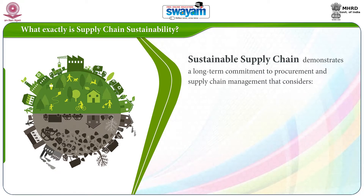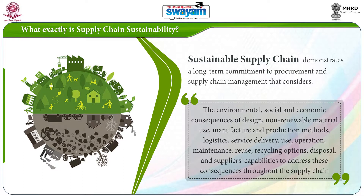A sustainable supply chain demonstrates a long-term commitment to the procurement and supply chain management that considers the environmental, social and economic consequences of design, non-renewable material use, manufacture and production methods, logistics, service delivery, use, operation, maintenance, reuse, recycling options, disposal, and suppliers' capabilities to address these consequences throughout the supply chain. This definition has been given by the Department for Environment, Food and Rural Affairs in 2006.